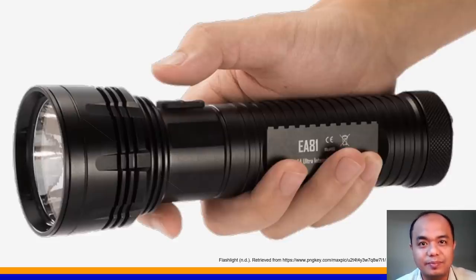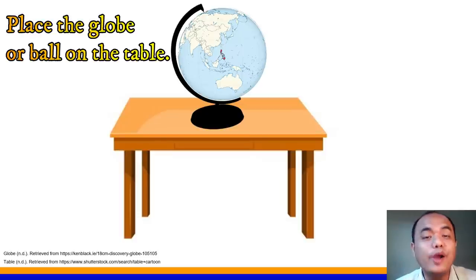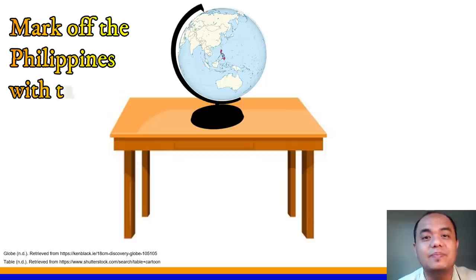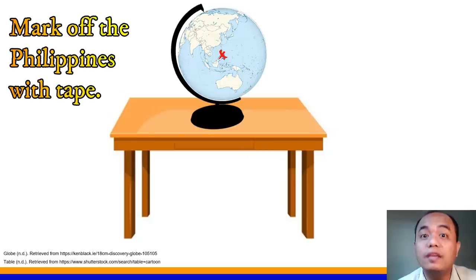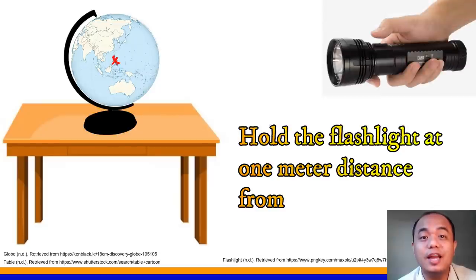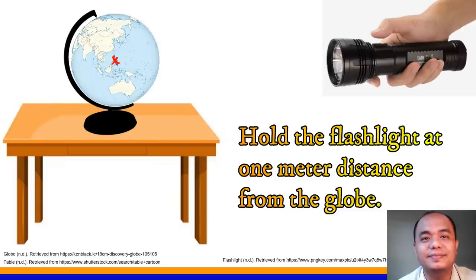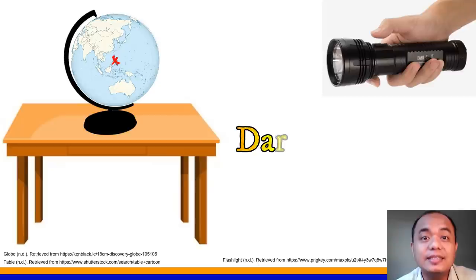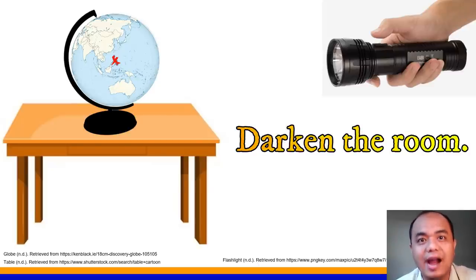Do you have your materials? Place the globe or the ball on the table. After that, mark off the Philippines with tape — locate the Philippines in the map and mark it with tape, just like you see here on the screen. If you are using a ball, you can put the mark on any part of the ball. Next, hold the flashlight at one meter distance from the globe or your ball, just like you see on screen. Then, please darken the room where you are.